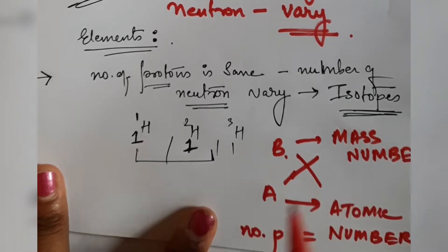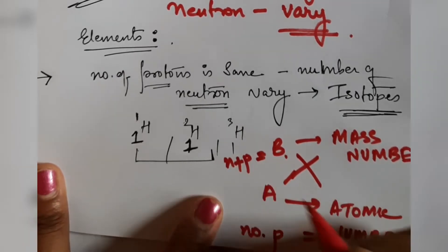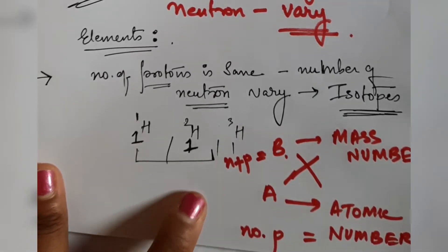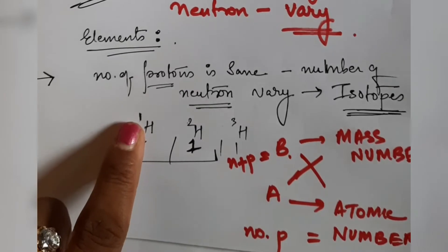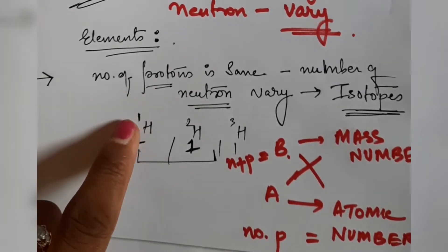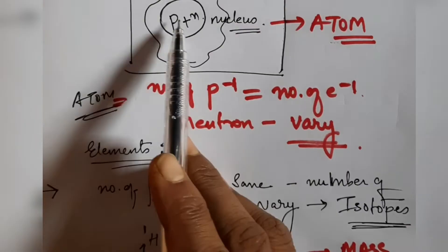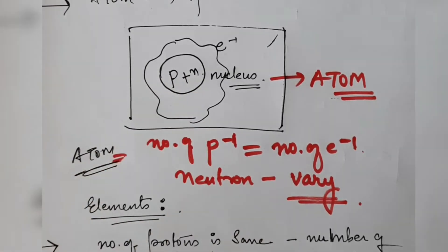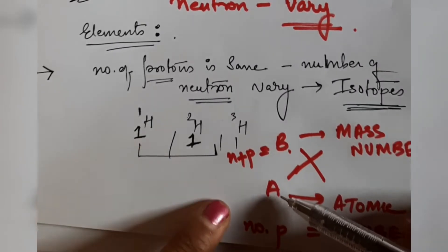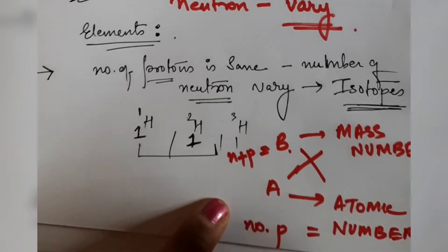The mass number A is equal to the number of protons plus neutrons. The mass number is always written above the element symbol and equals protons plus neutrons, since inside the nucleus there are both. What is written below is the atomic number, which equals the number of protons only, and which is also equal to the number of electrons.